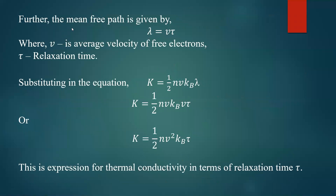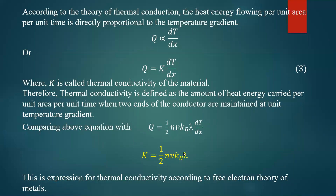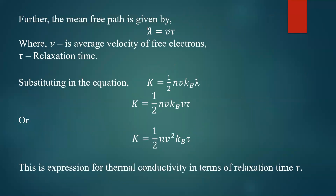We can express thermal conductivity in terms of relaxation time, and also in terms of mean free path. The relation between mean free path and relaxation time is: lambda equals v times tau. Here lambda is the distance covered in one collision, v is the velocity, and tau is the time taken between successive collisions — that is, the time required from one collision to the next. So lambda equals v times tau, where v is the average velocity and tau is the relaxation time.